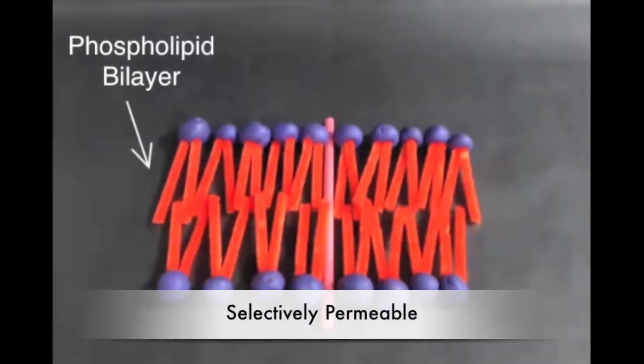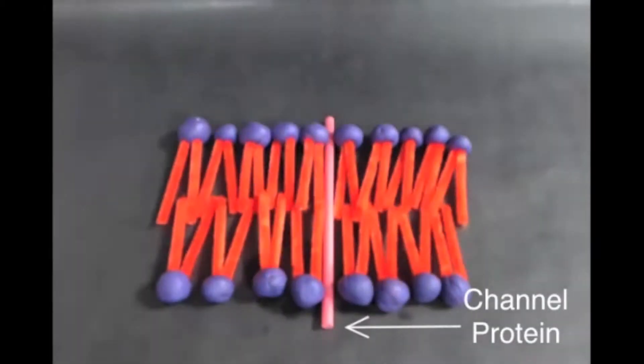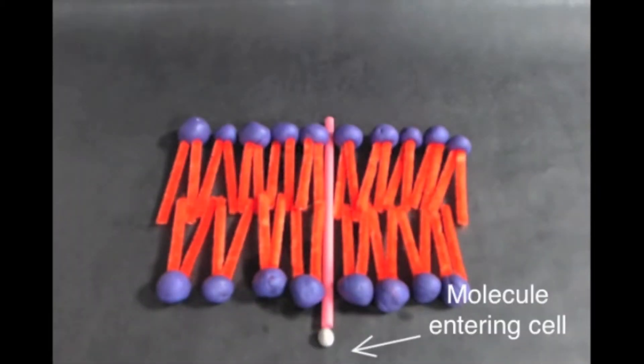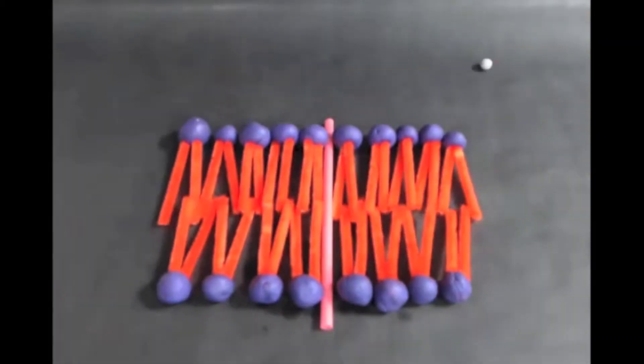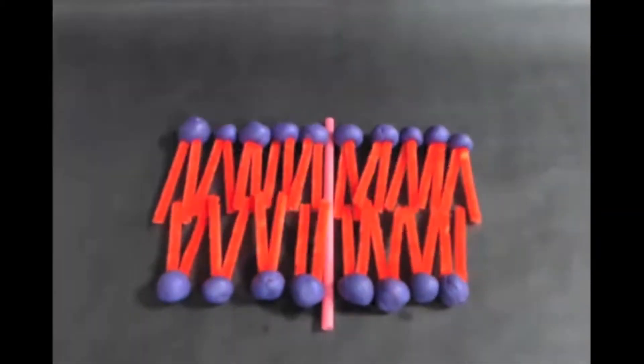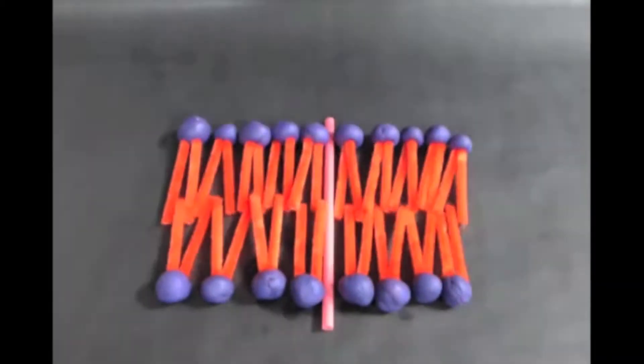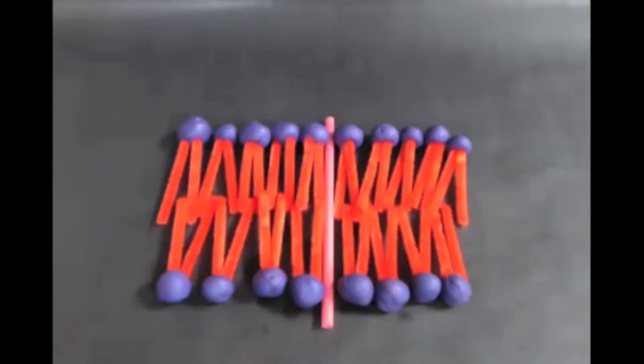In addition to being described as a fluid mosaic, the cell membrane is called selectively permeable. This means that the membrane allows certain molecules to pass through. Cells need to allow food, oxygen, and nutrients in and waste or proteins out.